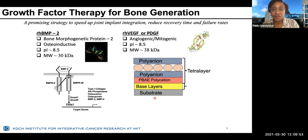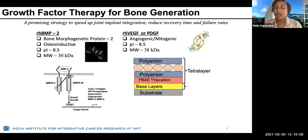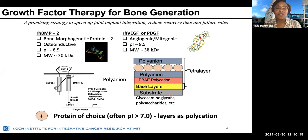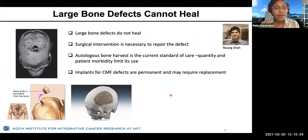For angiogenesis we use either VEGF or platelet-derived growth factor (PDGF), which are angiogenic or mitogenic growth factors supporting the generation of blood vessels. Both proteins are positively charged under our assembly conditions, so we use a common tetra-layer: poly(beta-amino ester), then something negatively charged, then our protein, then another negatively charged polymer. We used polyacrylic acid and polysaccharides such as dextran sulfate.